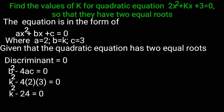k² - 24 = 0. k is equal to plus or minus root 24.